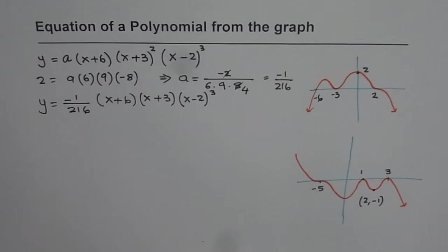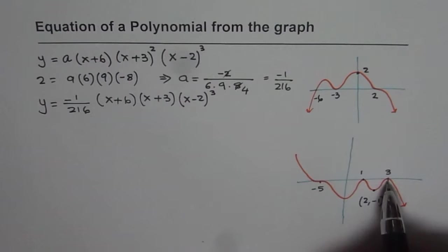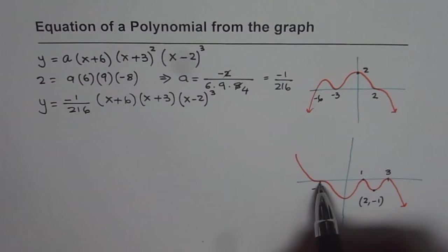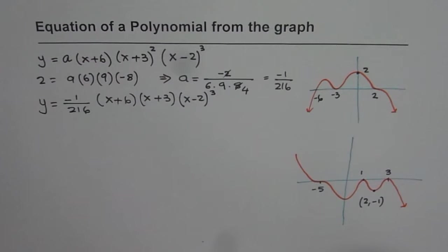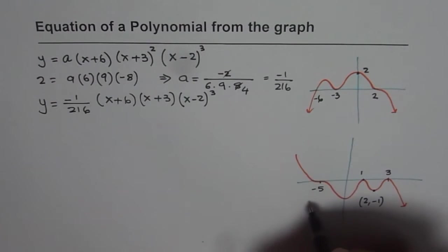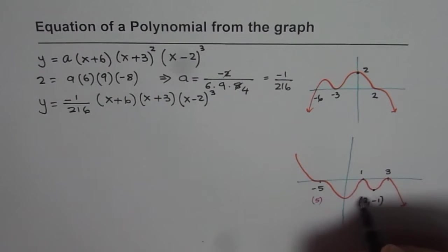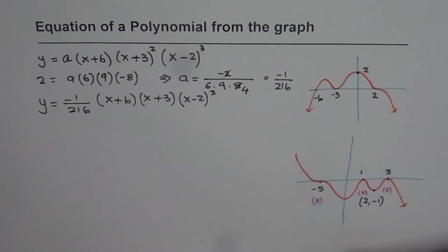Now we need to find equation of this graph. Now we have this zero which is of order 2, this zero is of order 2 and let us say the order of this zero is not 3 but 5. So multiplicity we are talking about that this graph multiplicity is let us say 5. Here the multiplicity is 2, here the multiplicity is 2.